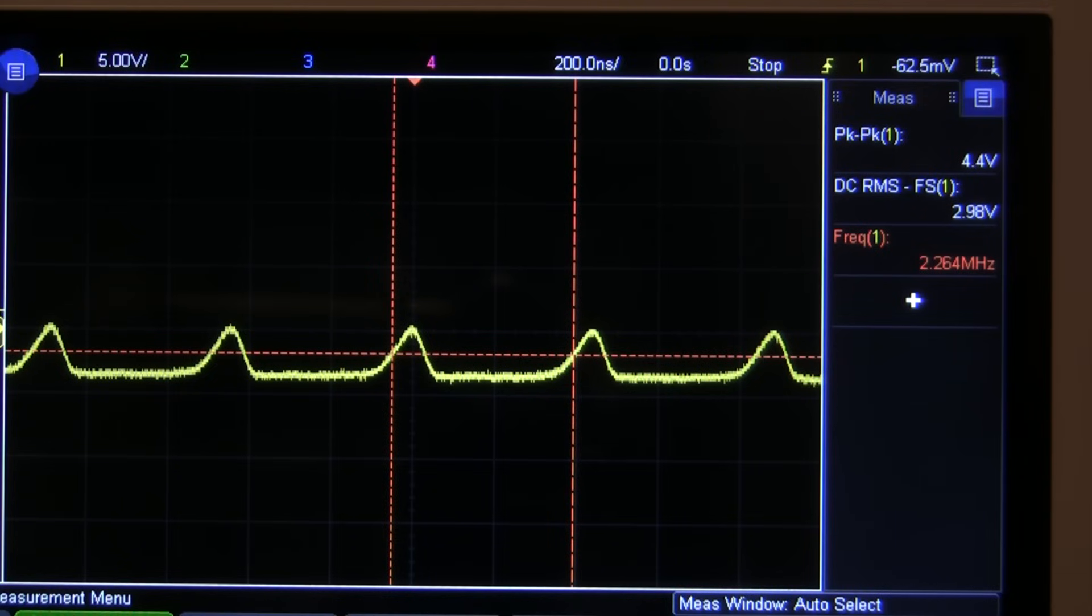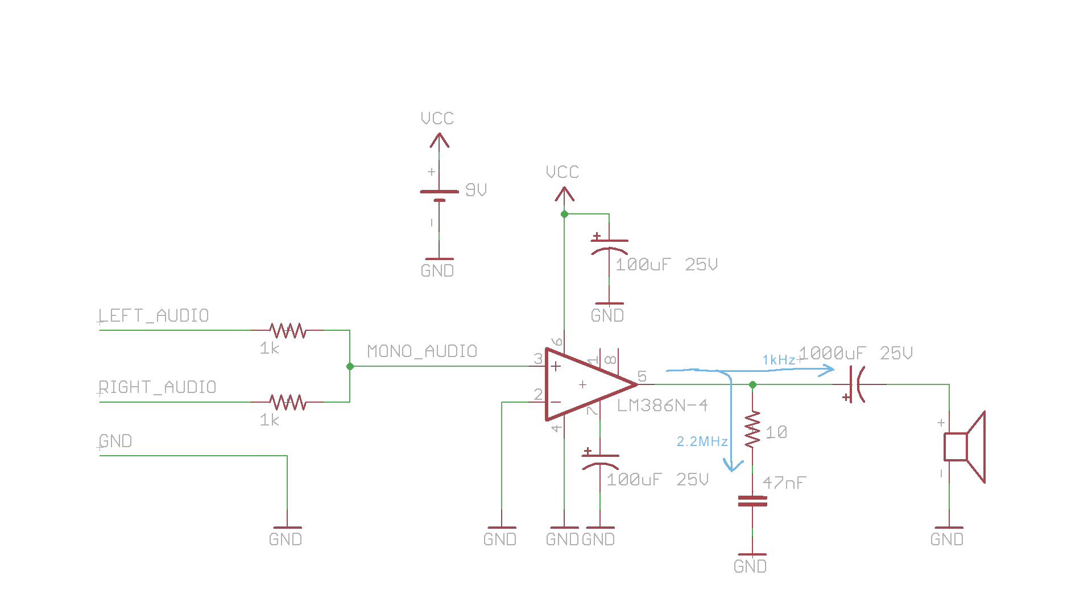It turns out that our amplifier is oscillating, and we need to get all of this high frequency garbage out of our feedback loop so it's only amplifying audio frequencies. Now, normally what you'd do here is add an RC highpass filter that'll send all the high frequency current to ground so it can't interfere with the audio.